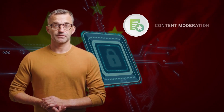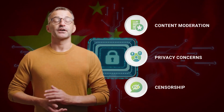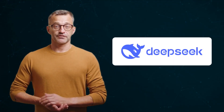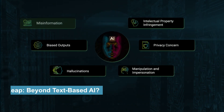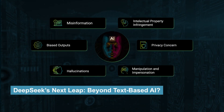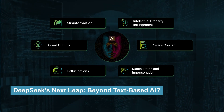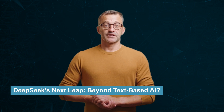Specifically: content moderation — how does it handle bias? Privacy concerns — is it secure for sensitive data? And censorship — can it handle politically sensitive topics fairly? While DeepSeek V3 is impressive, these concerns around bias, privacy, and content moderation are important discussions for any AI system. Transparency and trust will be key to its long-term success.